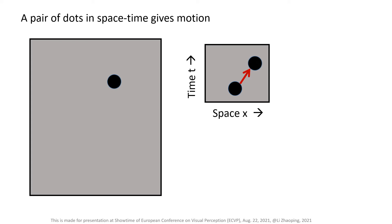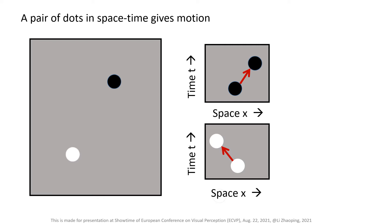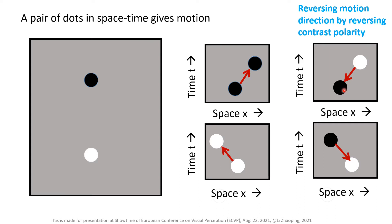A pair of dots separated in space-time gives motion. This example gives a motion to the right, and this one gives a motion to the left. However, if the contrast polarity flips from one dot to the next dot in a pair, the perceived motion direction is the opposite of the actual direction. This is the well-known reverse phi motion.